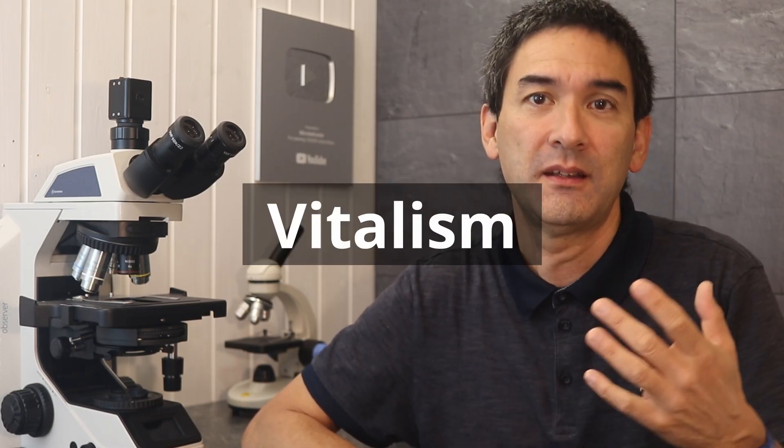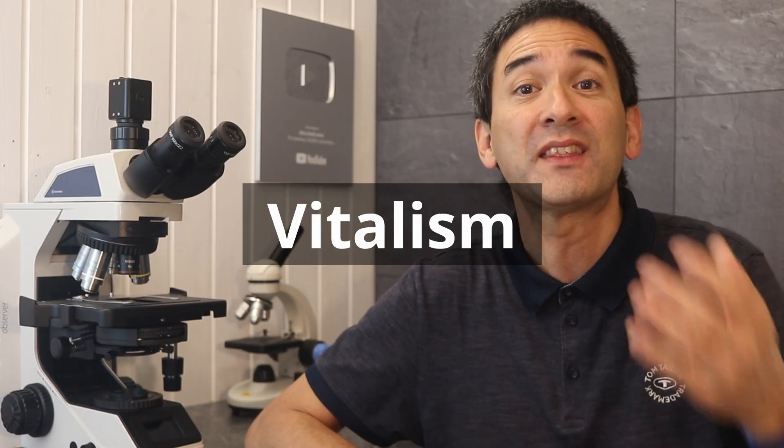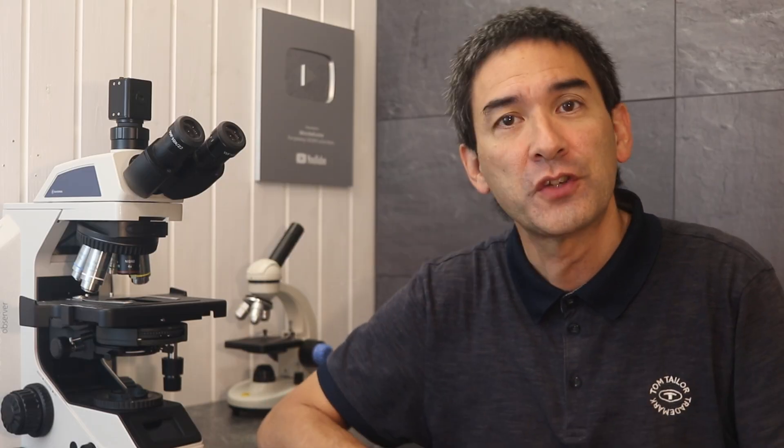The first outdated theory in biology is called vitalism. It's a very old theory that goes back thousands of years to the Greek philosopher Aristotle. This view actually persisted all the way into the 19th century.